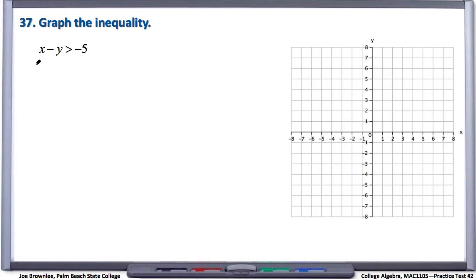Number 37, graph the inequality, and we have x minus y is greater than negative 5.